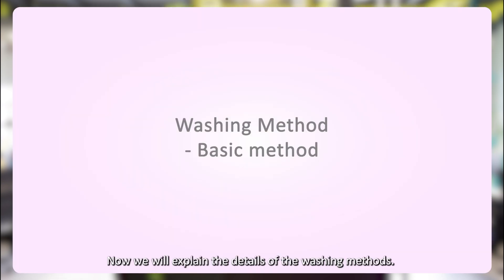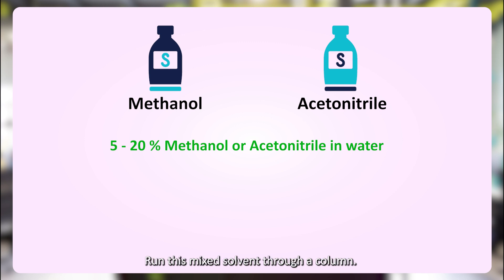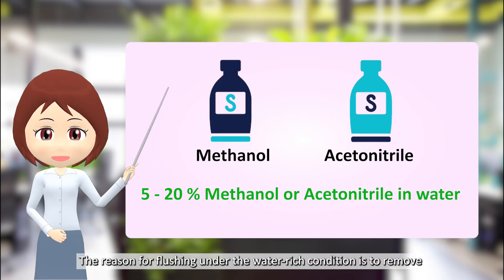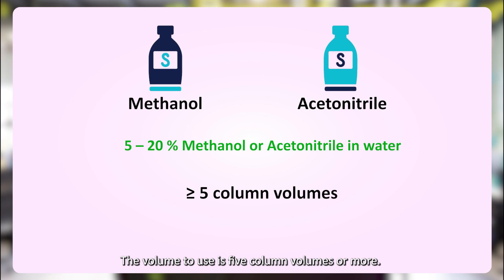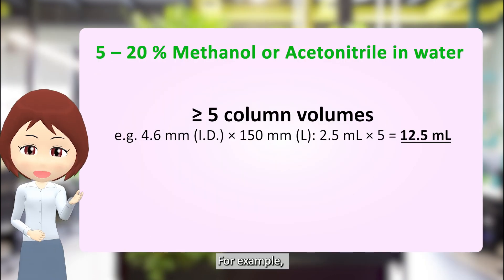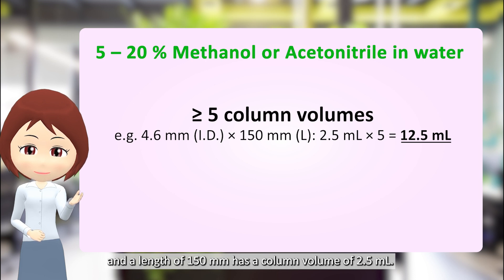Now we will explain the details of the washing methods. First, create a mixture of 5–20% methanol or acetonitrile and water, and run this mixed solvent through the column. The reason for flushing under a water-rich condition is to remove precipitated substances, such as salts remaining on the column. The volume to use is 5 column volumes or more. For example, a column with an inner diameter of 4.6 mm and a length of 150 mm has a column volume of 2.5 ml.